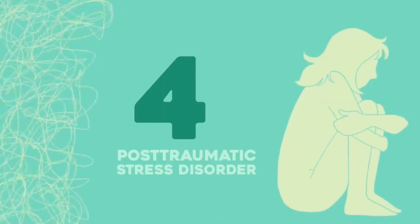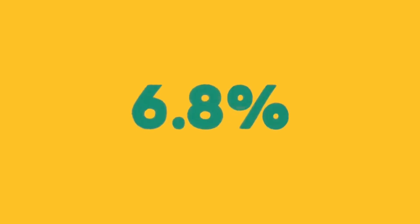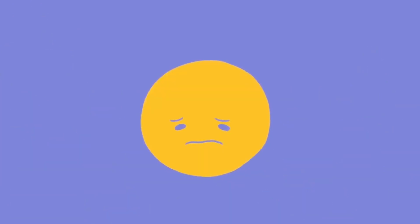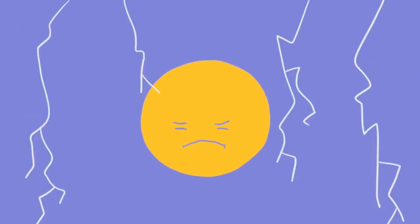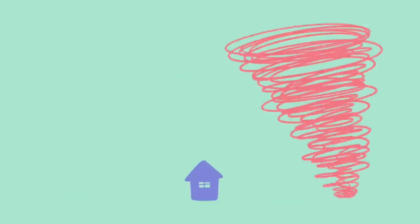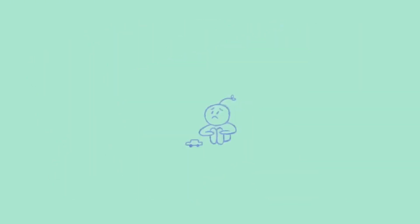4. Post-traumatic Stress Disorder. An estimated 6.8% of the U.S. population will develop some form of post-traumatic stress disorder — that's about 19 million people in the U.S. alone. Everybody will get stressed out by something in their lives, but some people will encounter something so stressful it affects them permanently. For many of them, this stress becomes trauma. A traumatic event is considered any event that should not have happened, such as a natural disaster, an assault, childhood neglect, abuse, or starvation.